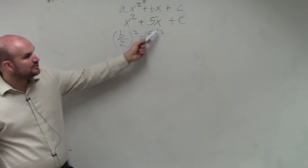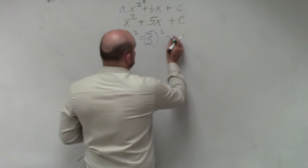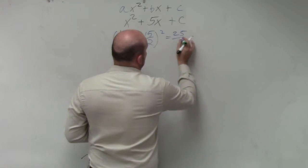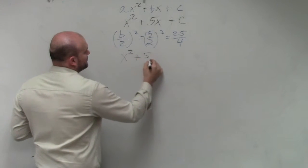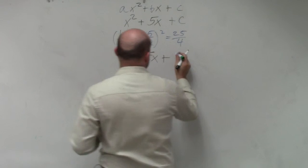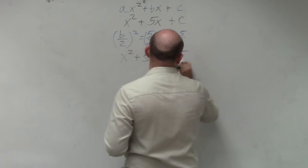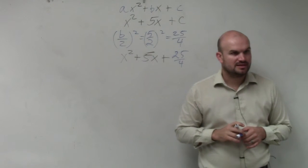So you're going to take 5 divided by 2 and square it. So 5 halves squared would be 5 halves times 5 halves, which is 25 over 4. So I'm simply just going to do x squared plus 5x plus 25 over 4. Does everybody see that? That's it.